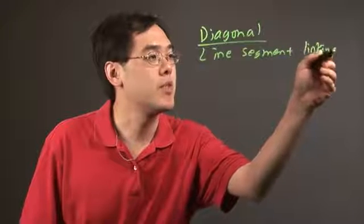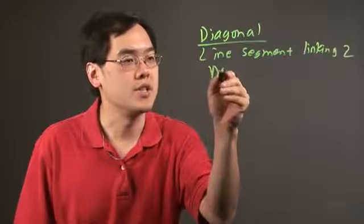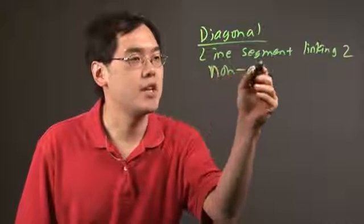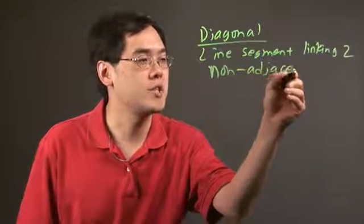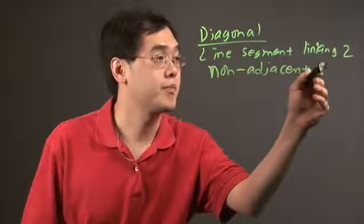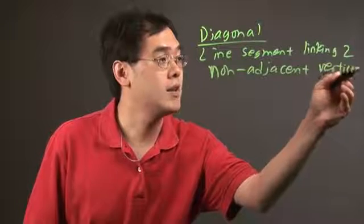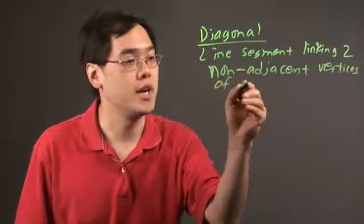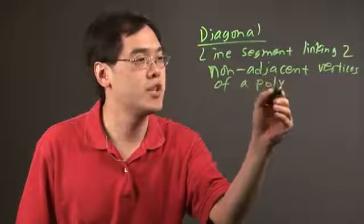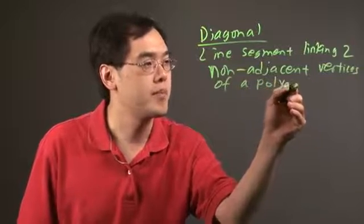But the important thing to think about is that the vertices have to be non-adjacent. In other words, they cannot be next to each other. And it happens in a polygon. So it's a line segment linking two non-adjacent vertices of a polygon.